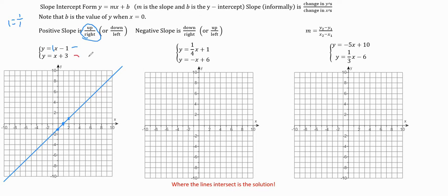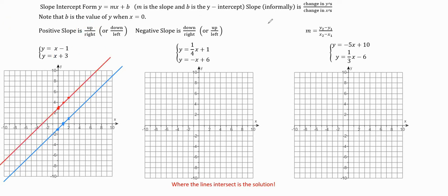The next one is y equals x plus 3. We'll do that in red. We start at the y-intercept, which is positive 3, so we go up 3 and put a dot there. Our slope is again 1, which is the same thing as 1 over 1. So we go up 1 and right 1 from that first dot, which gives us another dot. We can do that again to get a third dot.